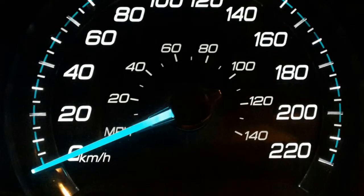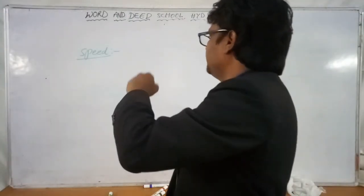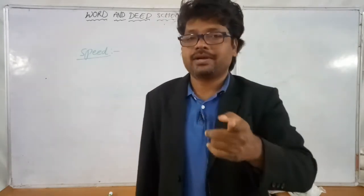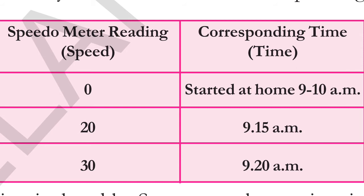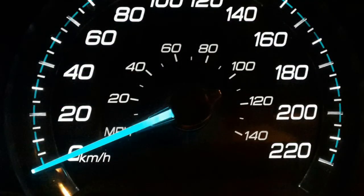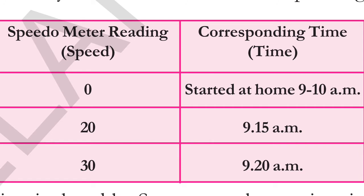Now let us understand what is speed. If you take a bike, you can see the speedometer — there is a hand moving when the vehicle is running. To understand speed, you need to do an activity: travel on a motor vehicle with your father to the market and observe the changes in the speedometer reading. Note the exact time when you start from home and note the speedometer reading at corresponding times. Does the speed of the vehicle remain the same throughout the journey?